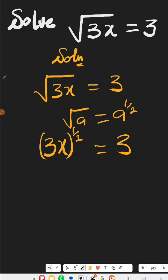Then how can we remove the power half? What we do is write 3x raised to the power of half times 2 equals to 3 raised to the power of 2.